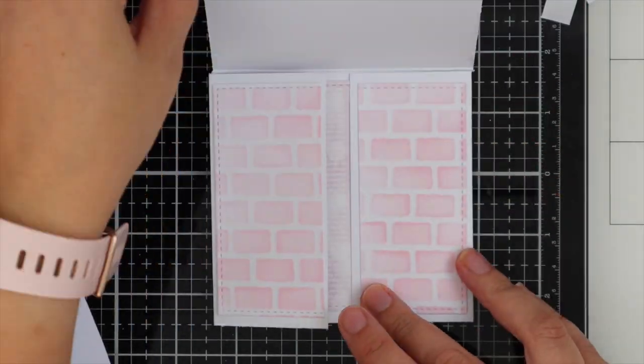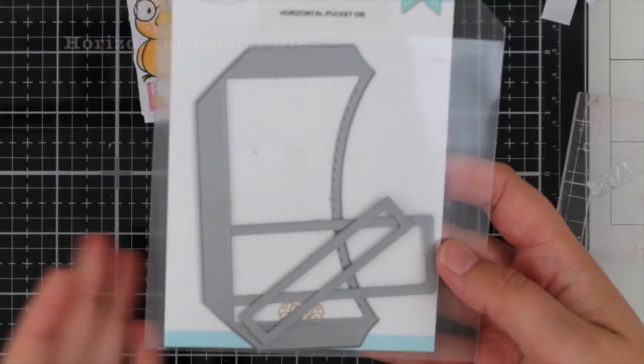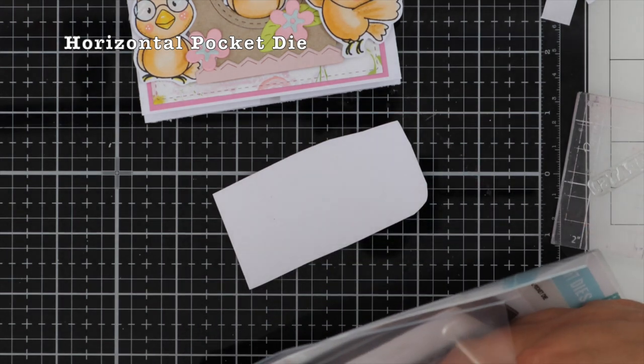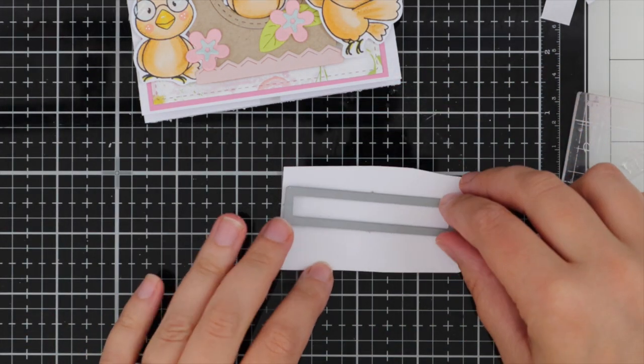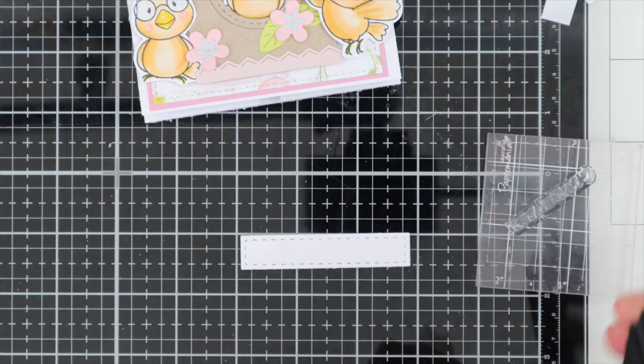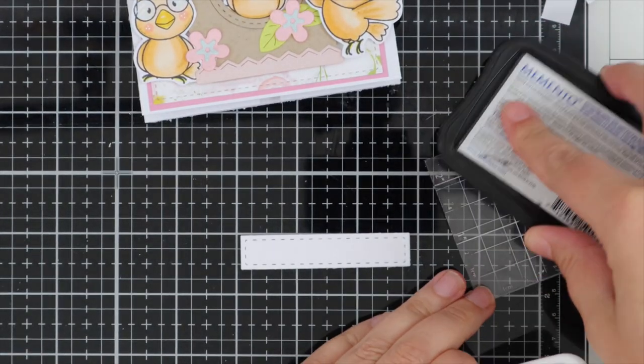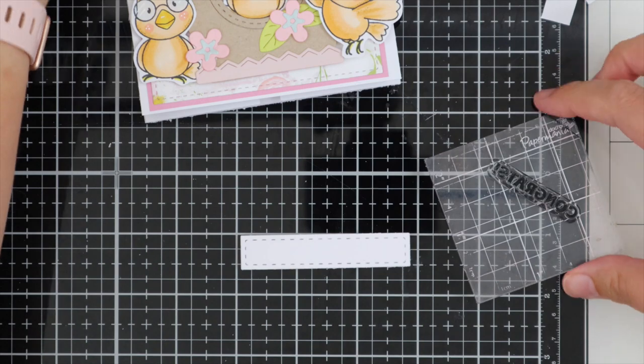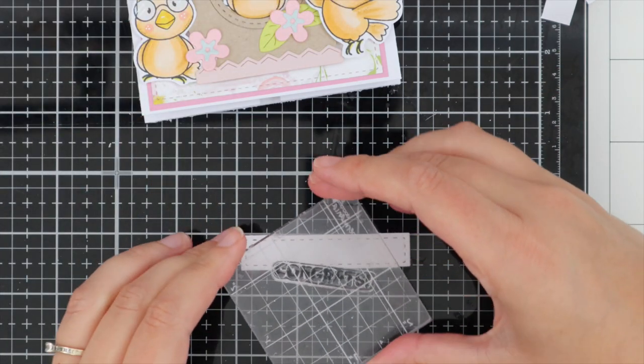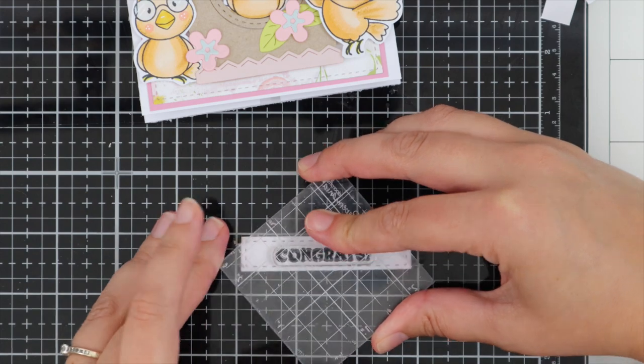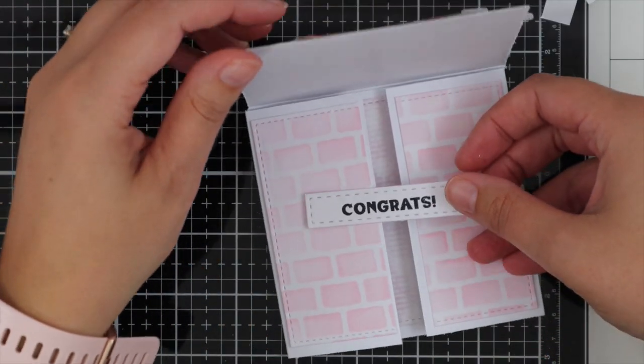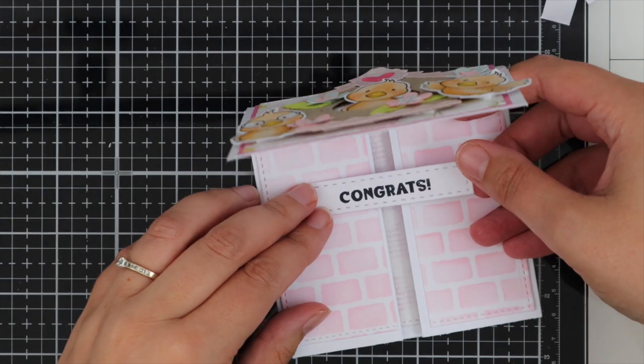Once they're popped down, I'm doing my greeting. I have the horizontal pocket die, and I love this little one that comes with the die for your greeting. I've die cut that out and I'm using memento tuxedo black ink to stamp my greeting.